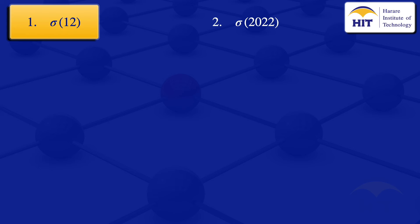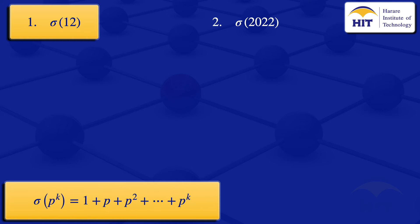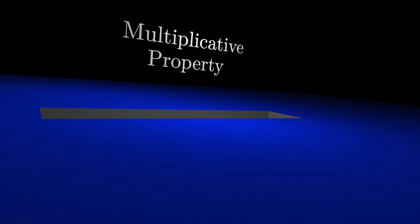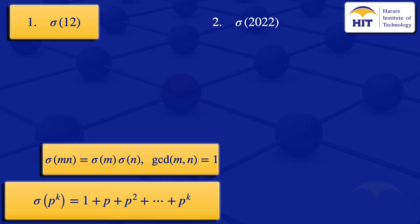When we have a prime raised to the power k, the sum of divisors of p to the power k equals 1 + p + p² + ... up to p^k, building up to the highest power of the prime. If the number is not of the form p^k, we can use the multiplicative property of the sum of divisors, which says sigma(m × n) = sigma(m) × sigma(n), provided the greatest common divisor of m and n equals one.